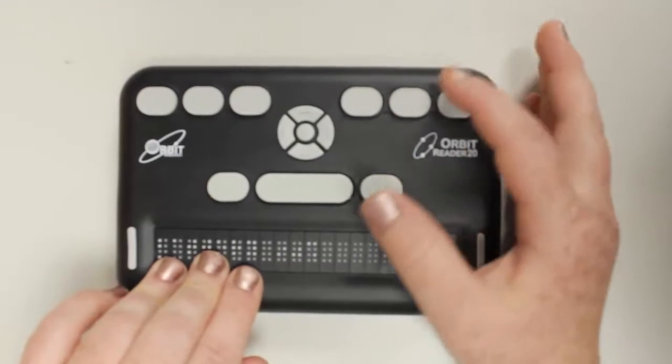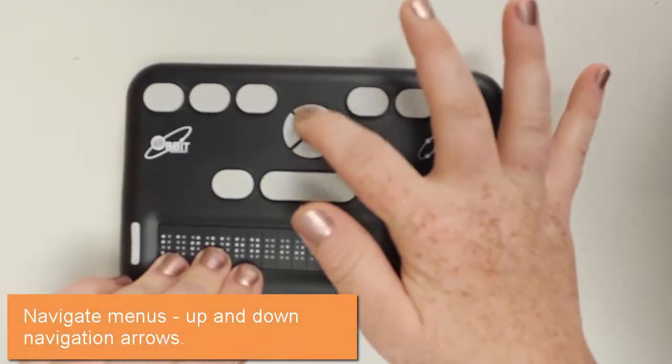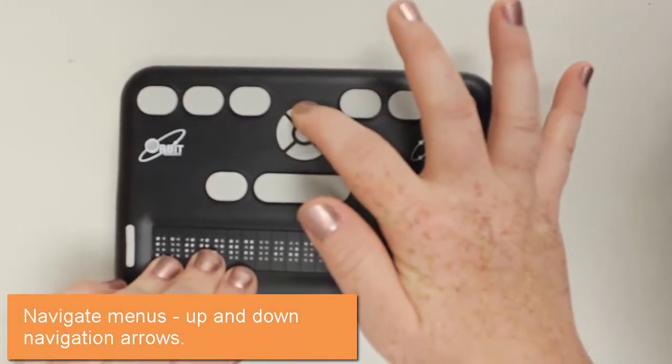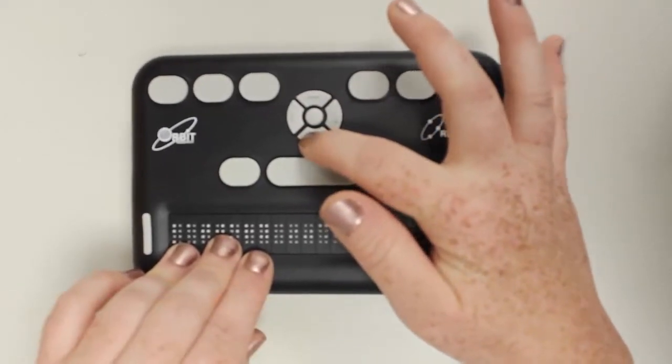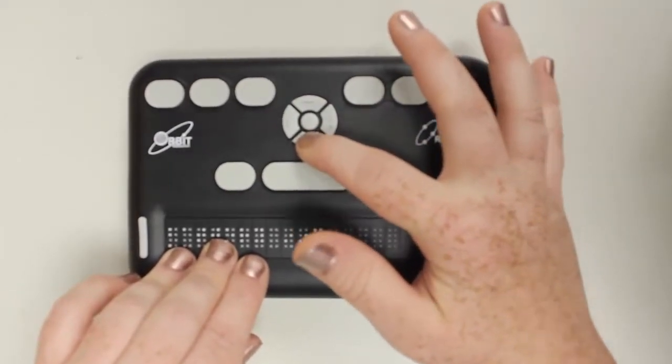To navigate the menus, we're going to use the down and up arrows of the navigation cross. The next menu is the cursor blink rate, and I'm going to show you how to make adjustments.